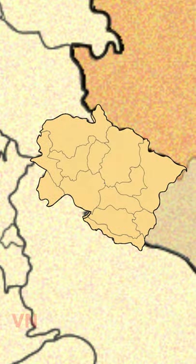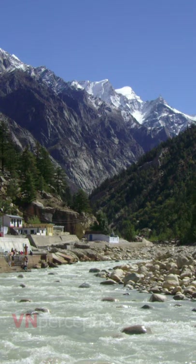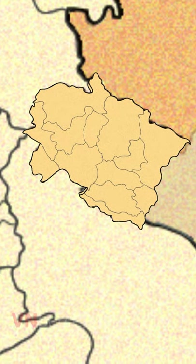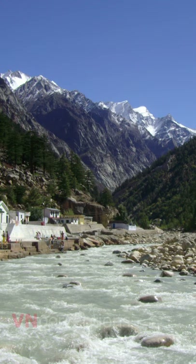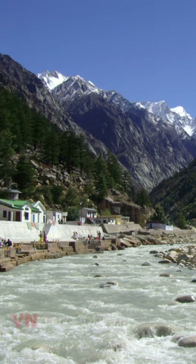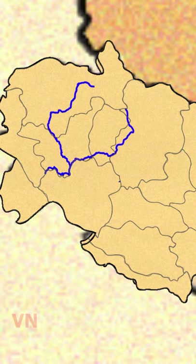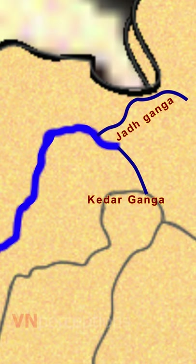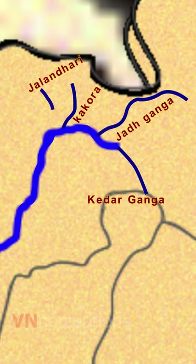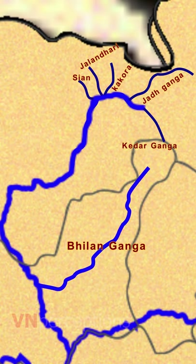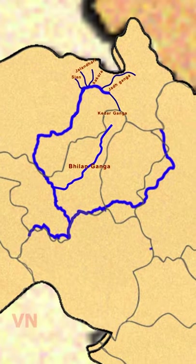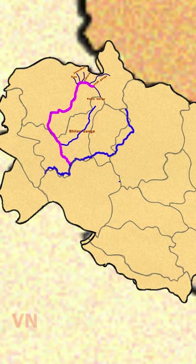Uttarakhand is also a source for important rivers such as Ganga and Yamuna. River Ganga is formed by the confluence of river Bhagirathi and Alaknanda. Bhagirathi originates in the Gangotri glacier, 18 km from the beautiful and serene town of Gangotri. It originates from Gaumukh, and on the way it meets Kedar Ganga, Jad Ganga, Kakoragad, Jalandharigad, Siyangad, and Bilanganga — which is a combination of Bil and Ganga and is the largest tributary of Bhagirathi.